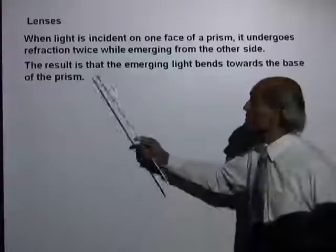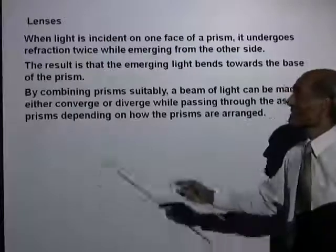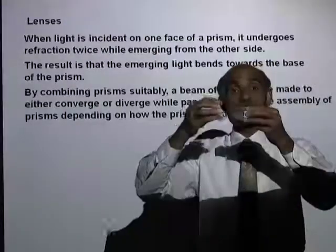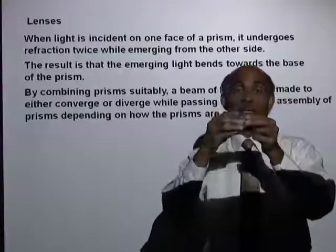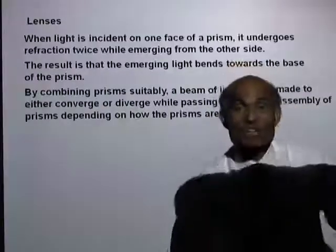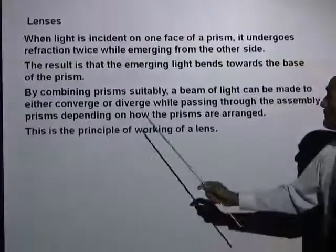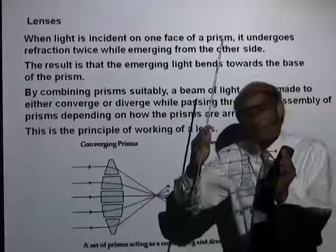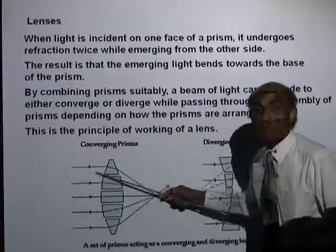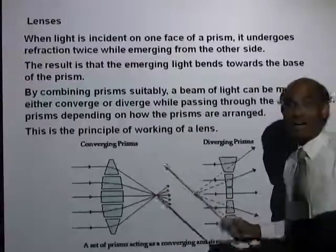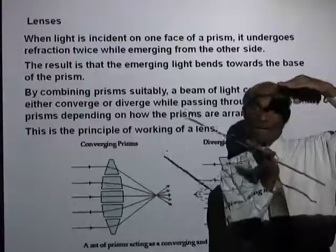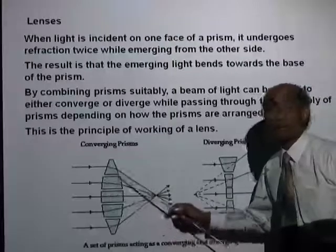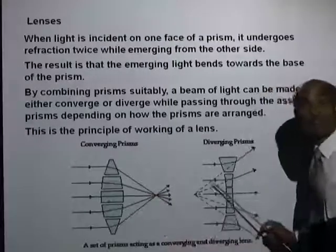When a ray of light passes through a prism, the emerging light bends towards the base. By combining prisms suitably — putting two prisms with the base of each facing each other — light will bend towards the base of each, acting as a converging system. This is the principle of working of a lens. These are actually lenses arranged so the bases are facing, and if you allow a beam of light to fall on them, they all converge to one point. On the other hand, if you put the prisms the other way — bases facing in the opposite direction — it produces divergence. By suitably combining prisms, you can produce a converging lens or a diverging lens.